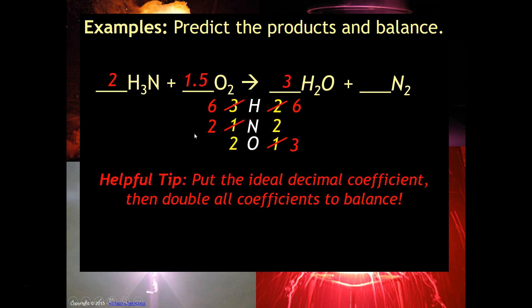So if you put the one and a half there you may say well you can't have one and a half molecules and you're absolutely right you can't. So what we do is we then say okay we're going to double all the coefficients. So instead of the two being there that'll become a four, instead of the one and a half that'll be a three, that'll become a six and this will become a two.